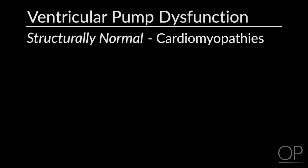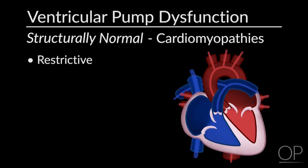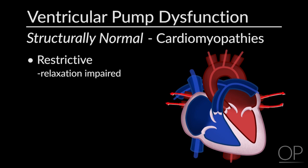Restrictive cardiomyopathy is a unique case in which systolic function—the pumping of the heart—is actually preserved; however, the relaxation of the heart is dramatically impaired. This impairment results in a buildup of pressure in the ventricle, which is then transduced into the atriums. If it's in the left ventricle, this pressure is transduced into the pulmonary vasculature, resulting in pulmonary edema and pulmonary vascular congestion, presenting clinically as significant tachypnea. On the right side, it results in systemic venous congestion, manifesting as hepatomegaly and splenomegaly.